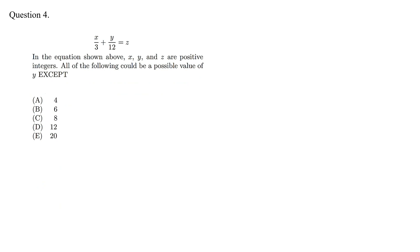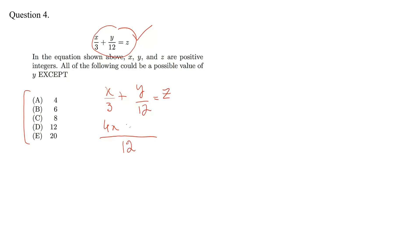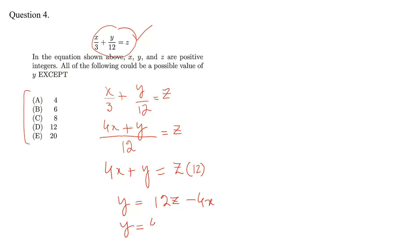The next question: in the equation shown above, x, y, and z are positive integers. All of the following could be a possible value of y except which one? Solve this equation for y. We can write it as x over 3 plus y over 12 equals z. Taking the LCM of 12: 4x plus y equals 12z, so y equals 12z minus 4x. Taking 4 as a common factor: y equals 4 times (3z minus x).